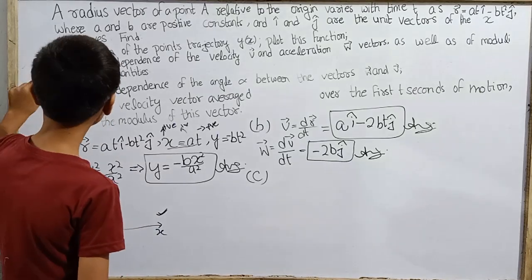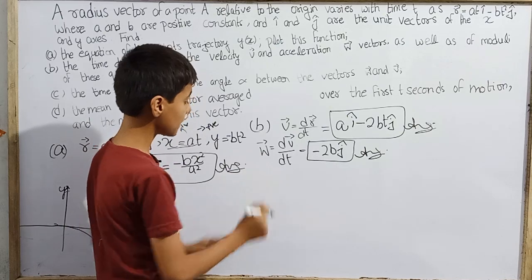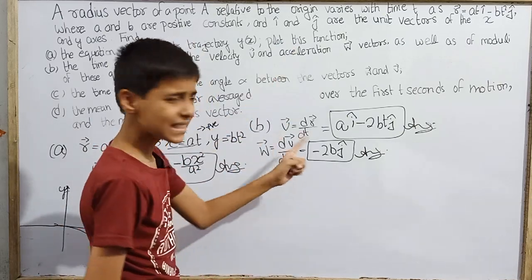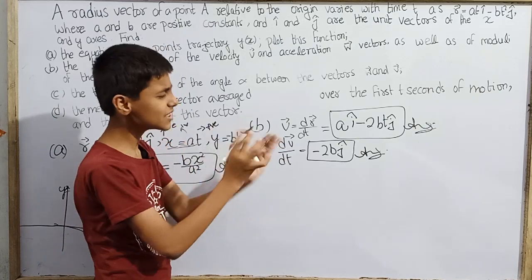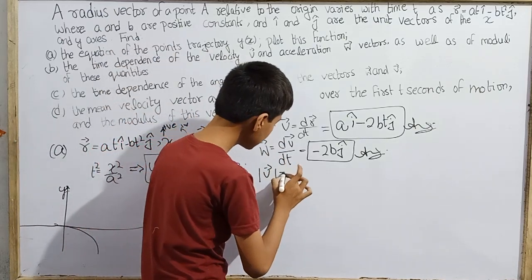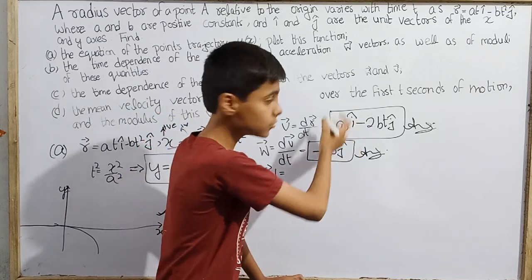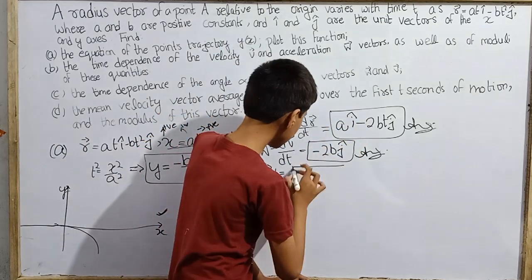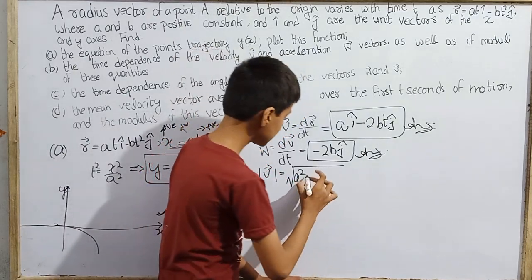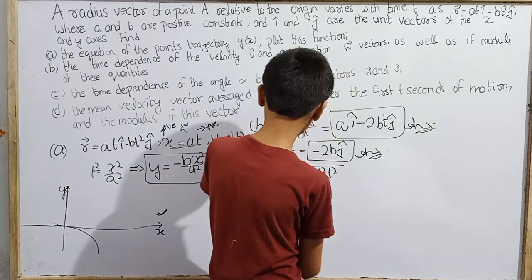The modulus of the velocity vector is the magnitude: |v| equals the square root of a² plus 4b²t². This comes from taking the square root of the sum of the squares of the components: √(a²·1 + 4b²t²·1).